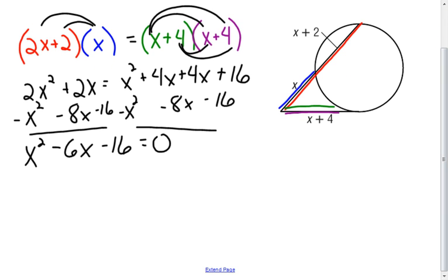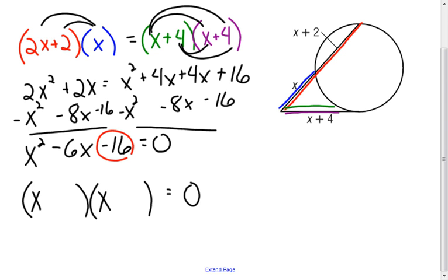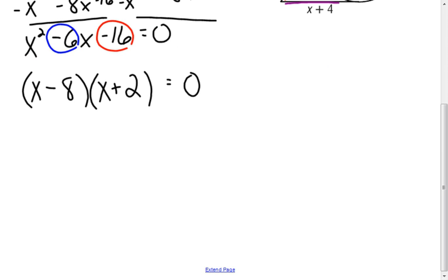To solve my quadratic equation I'm going to try to factor it — make my double set of parentheses, still equal to 0. Being x squared is the first term, that's going to be an x and an x in each set of parentheses. The numbers that go in the second part of each parentheses have to multiply to be negative 16, but they have to add together to be negative 6. Being I have a negative 16, one of these has to be negative and one has to be positive, and being it's a negative 6, I know my larger number is going to have to be the negative. 8 and 2 multiply to be negative 16, and if I take negative 8 and add 2, I get negative 6. You could FOIL it back together to check it, and you'd end up right back here.